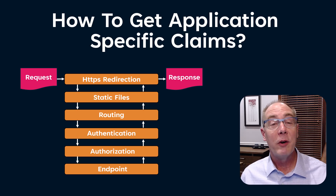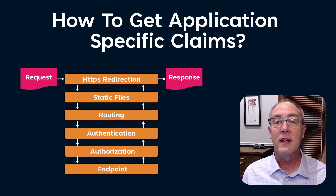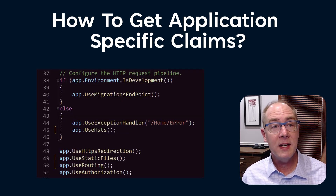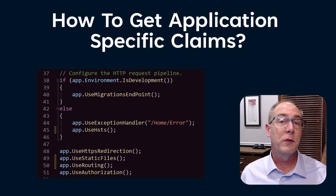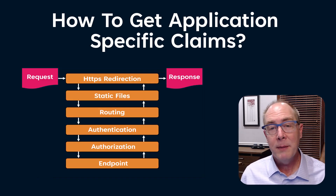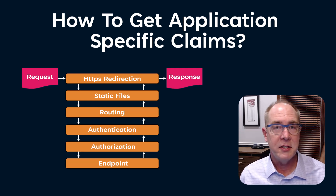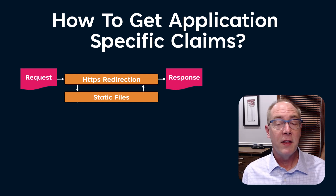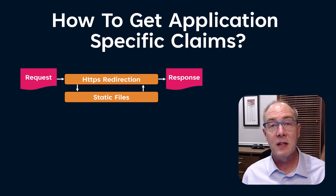When a request comes in, there's a series of components that get invoked to process the request. Typically in your program.cs file, you'll define stages of the pipeline that you want to use, and that could include things like authentication or HTTPS redirection. What's great about this design is that one of those stages can decide to end the processing of the request. If the request was just looking for a static file like an image, then the remaining components don't need to be invoked, which avoids doing work that's not needed and boosts performance.